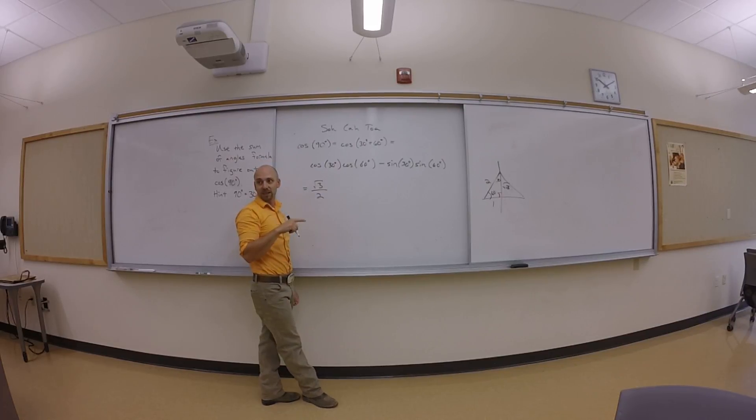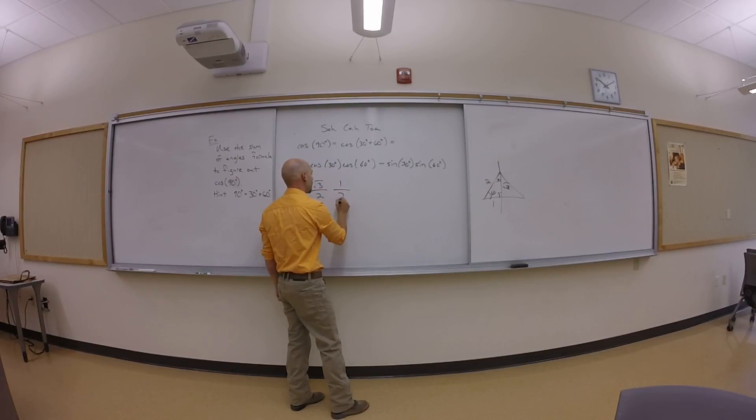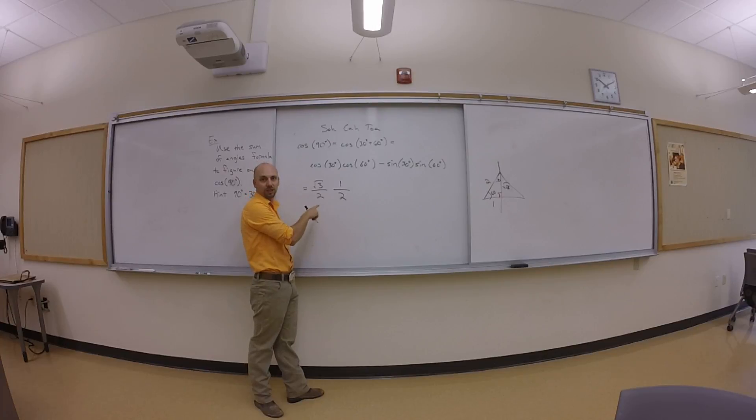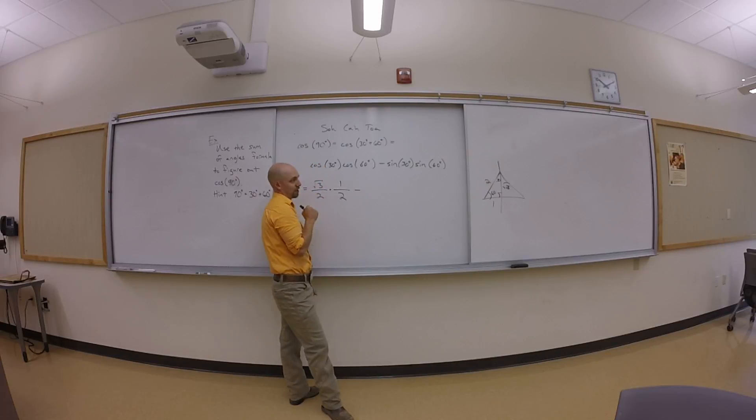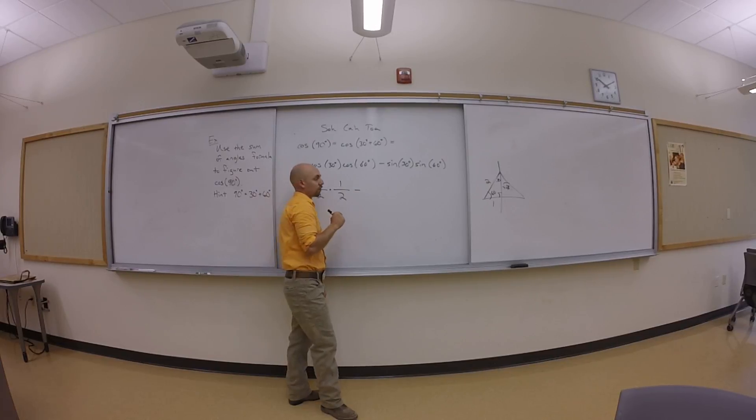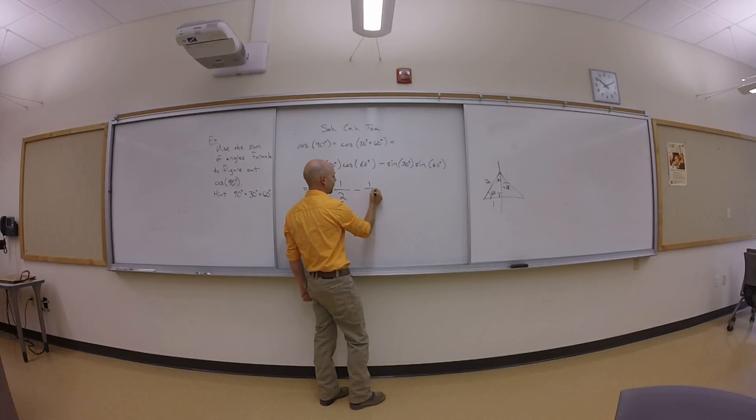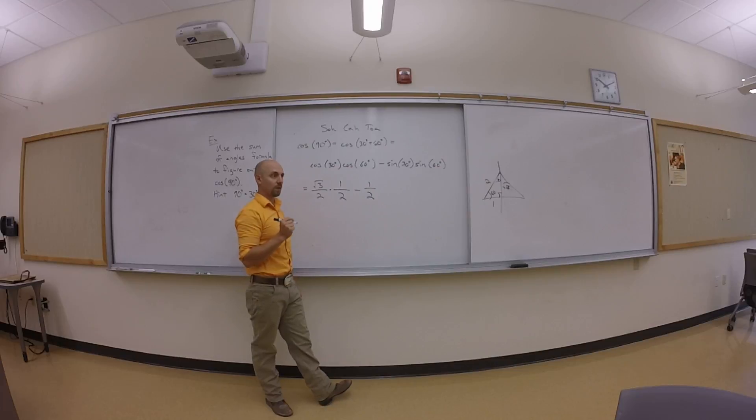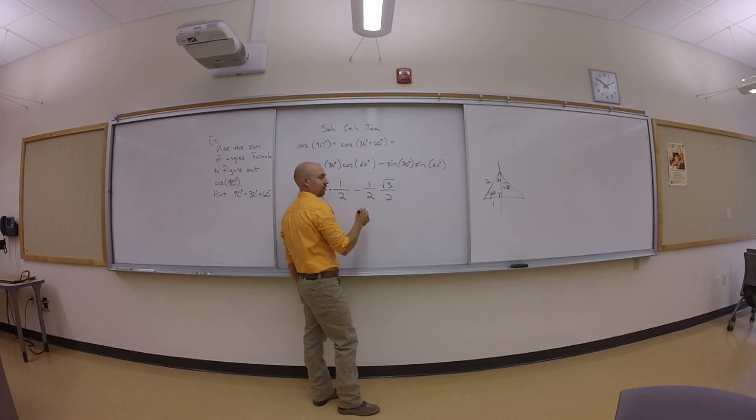Cosine of 60 degrees is one half. I went adjacent to the 60-degree angle, that's one, and I divided by the hypotenuse. What am I doing between these two things? Multiply. Then I need to subtract. What's the sine of 30? Opposite of 30 is one divided by the hypotenuse, one half. And then the sine of 60 is square root of three over two. And I'm multiplying these together.